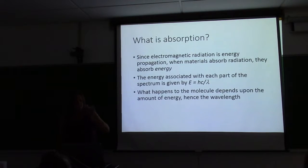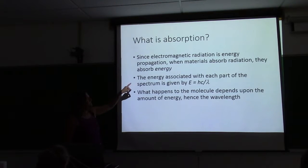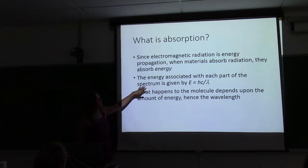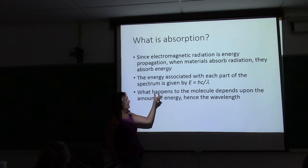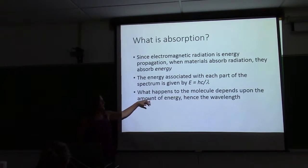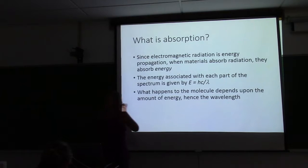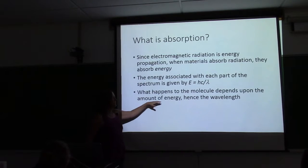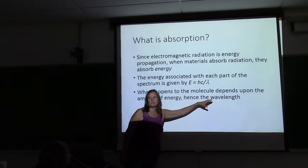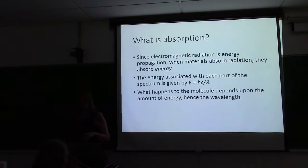Here we go from gamma rays to x-rays, and then there's the little tiny part of the visible spectrum and into the infrared and microwave. Since this energy is propagating, when materials or compounds absorb this radiation, they're absorbing this energy. The energy associated with each part of the spectrum that they might be absorbing is given by hc over lambda. What happens to the molecule or compound when it absorbs energy depends upon the specific part of the spectrum in which it's absorbing, and that determines how much energy — so it really depends on the wavelength.